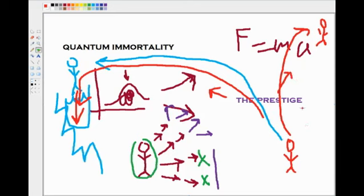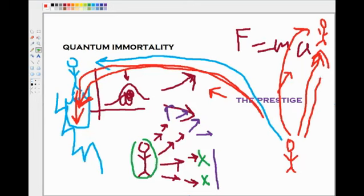But quantum immortality solves a problem for him. Every night, he has to go into this one. His consciousness has to go into the one that survives. Because the one that doesn't survive, well, there's nothing left happening there. There will be consciousness in both of them, but he'll keep going on in this one. And no matter how many times he does it, he will always be the one that survives.